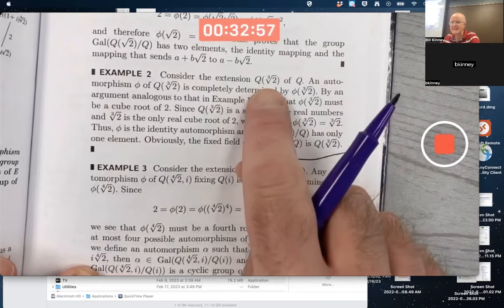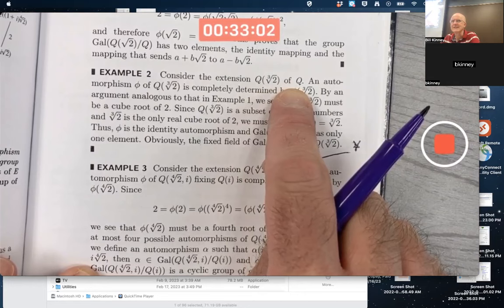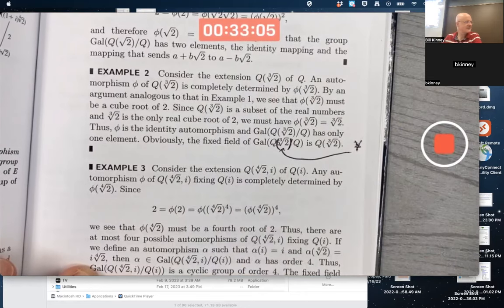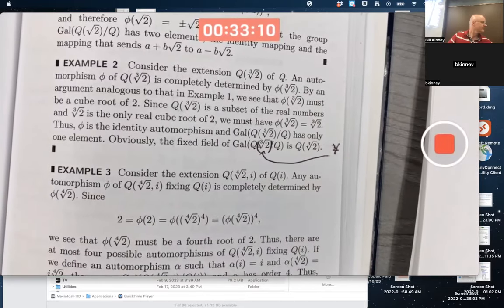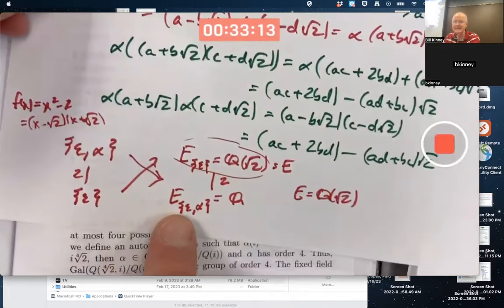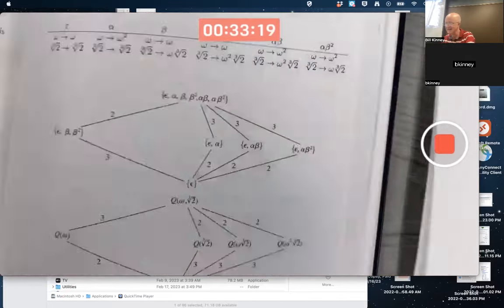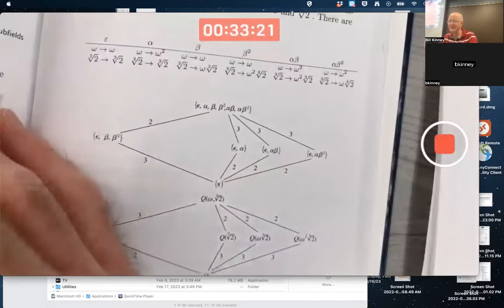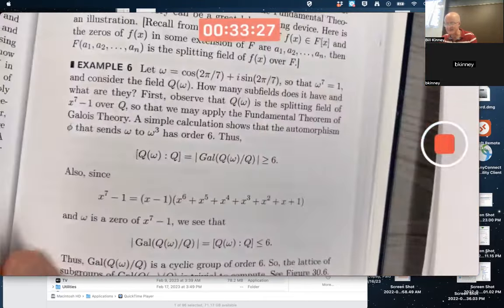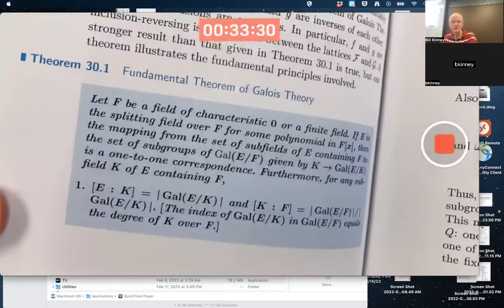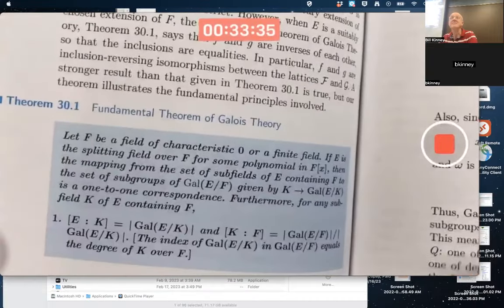But wait a minute. That's a degree three extension of that. Does this contradict the fundamental theorem of Galois theory? Where'd my tower of fields go? Can I not make something like this? The answer is no, you can't. Why not? Because if you look at the statement of the fundamental theorem of Galois theory, which is a very difficult theorem to understand, and we're not going to understand it completely. Goes over two pages. Yikes.